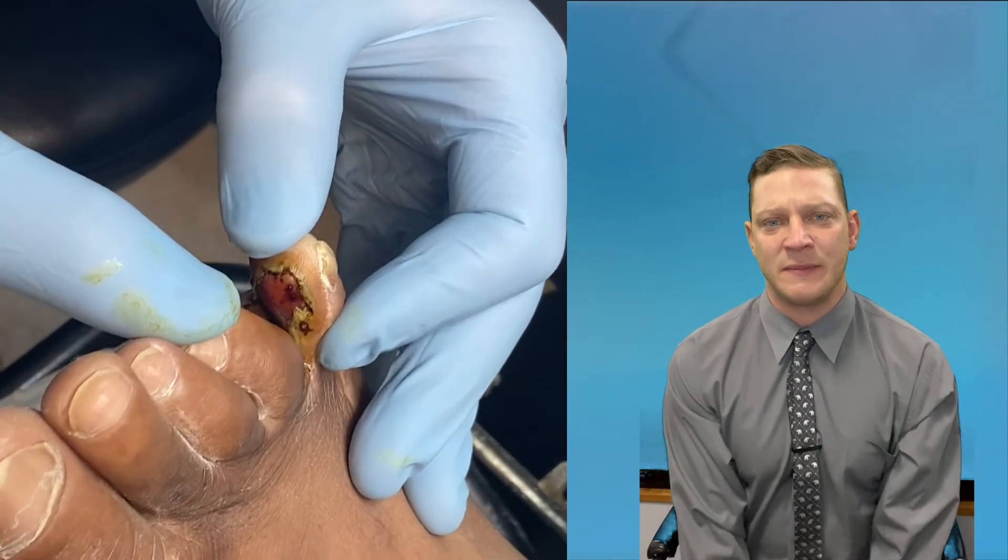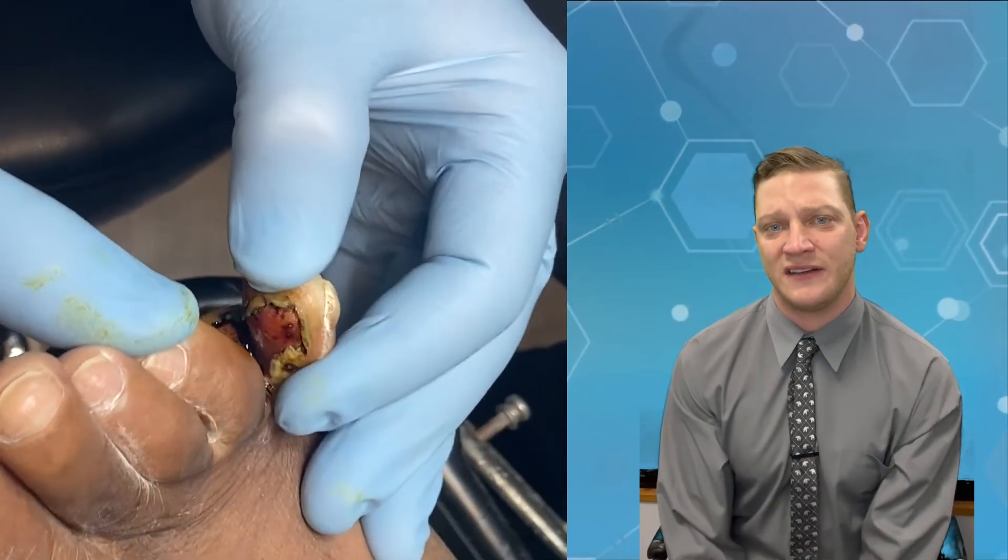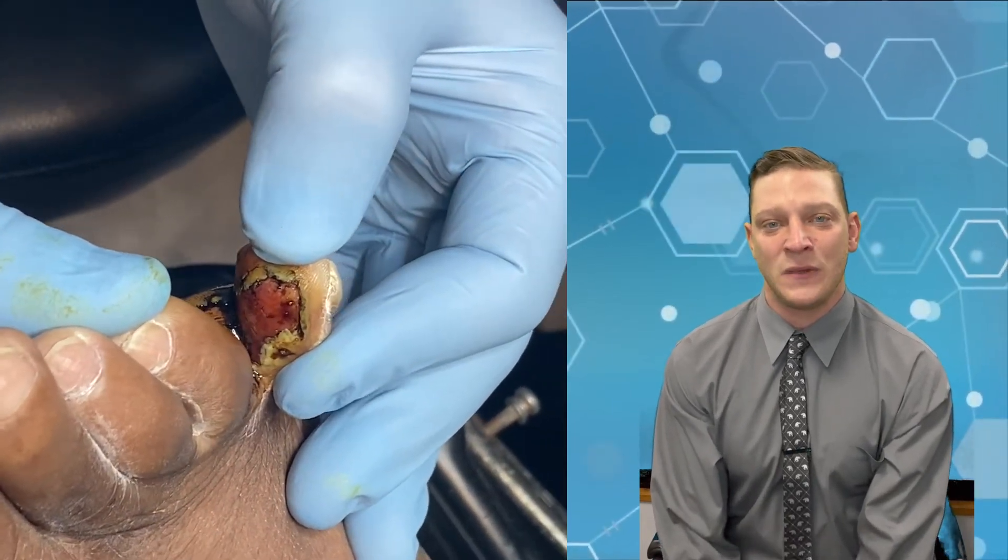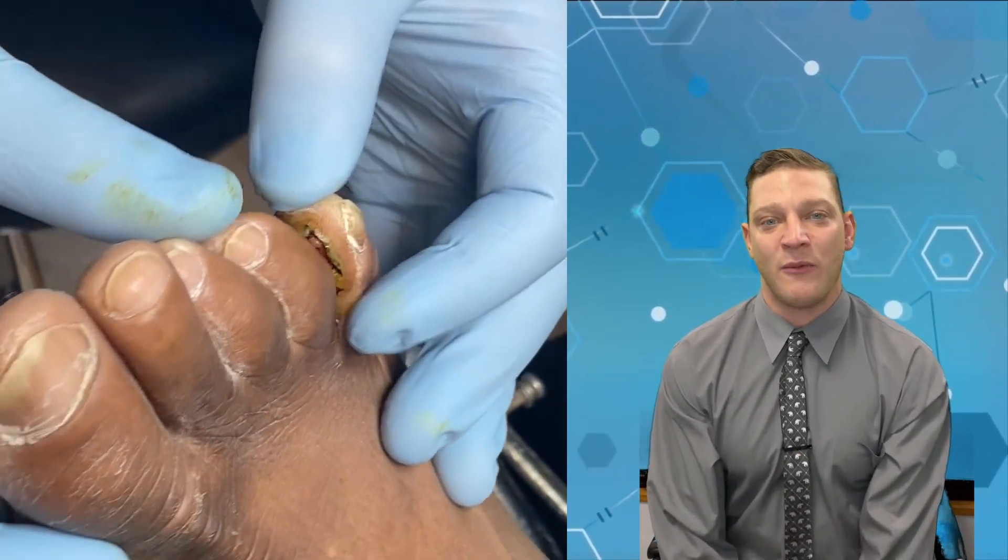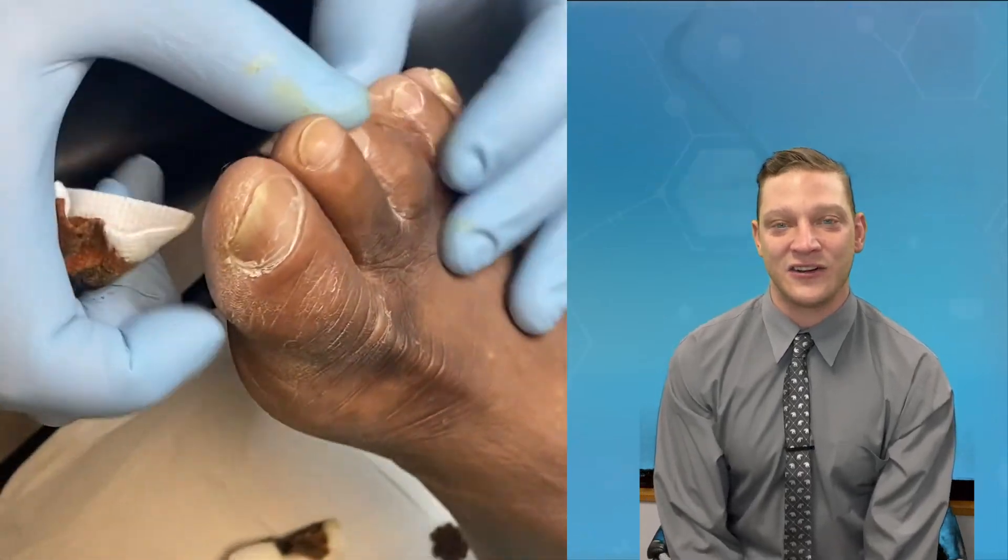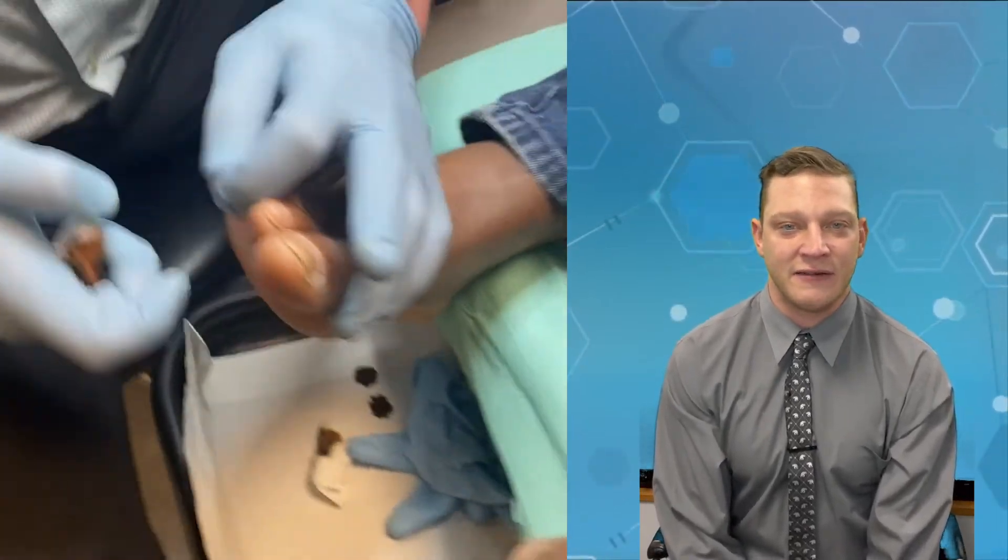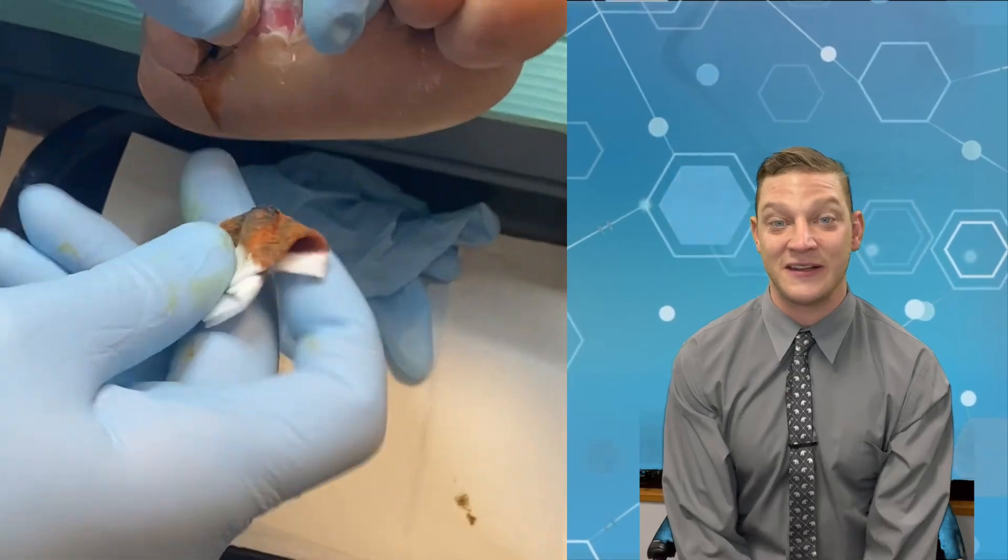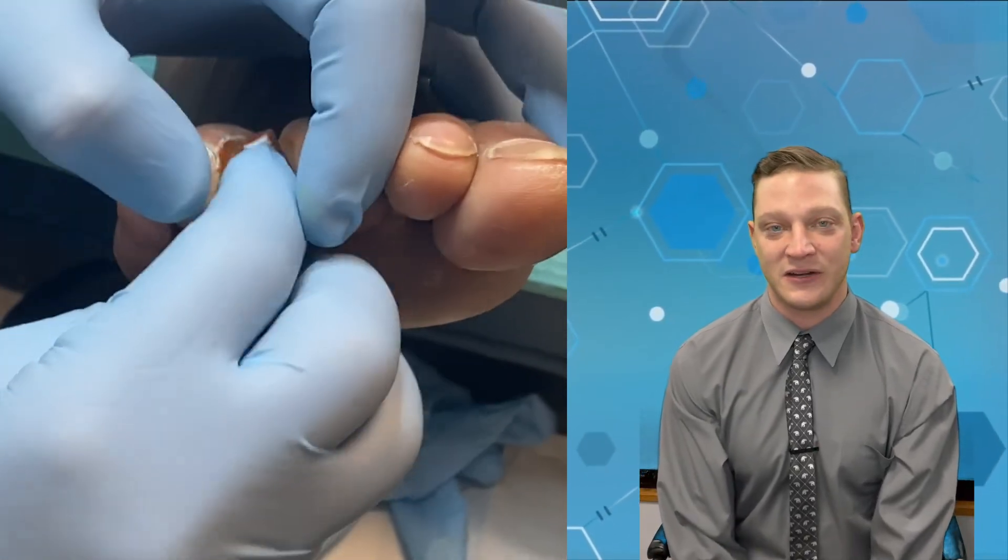So when you have tinea pedis that's really, really bad, and the body is exudating lots and lots of fluid because the tinea pedis has ulcerated the skin, we call this interdigital maceration or interdigital tinea pedis. Here we have a good video of it. Here this guy has been putting starch onto his feet to help dry it out. And when we put on the iodine, it turns purple. I've never seen that reaction in chemistry class, so I had to look it up. I thought that was pretty cool.